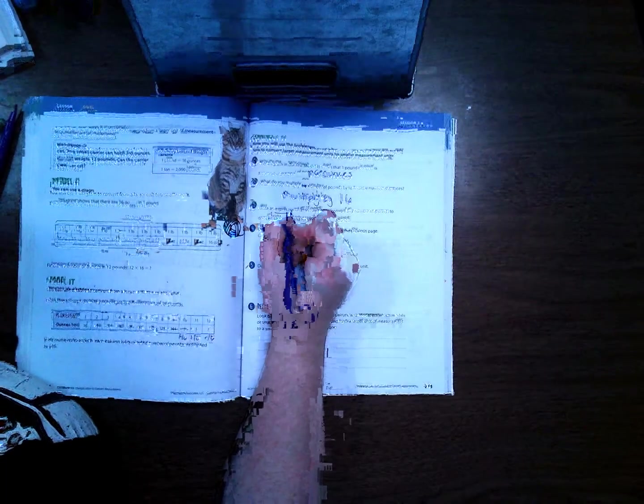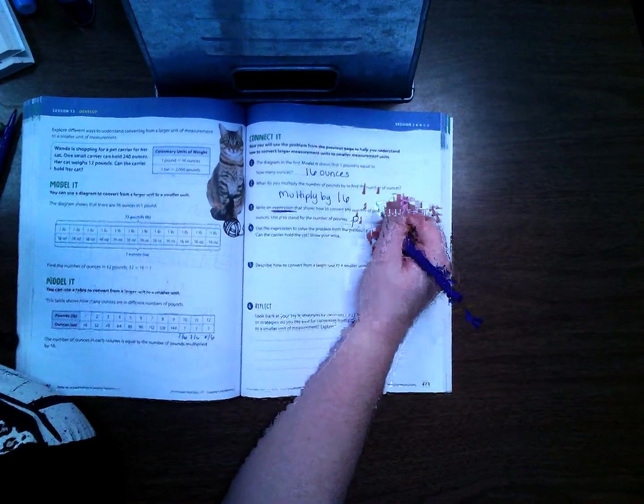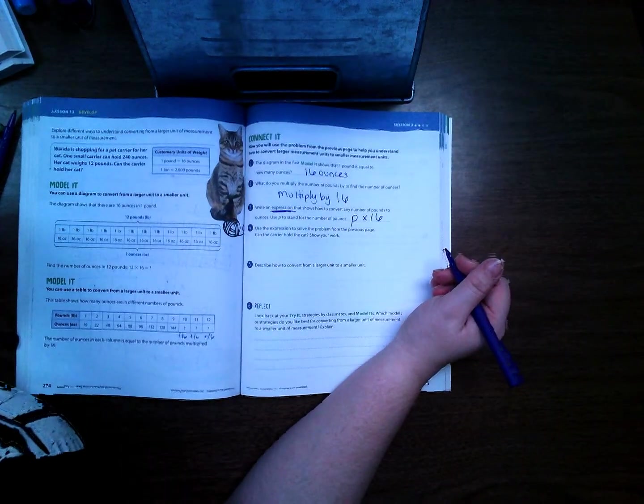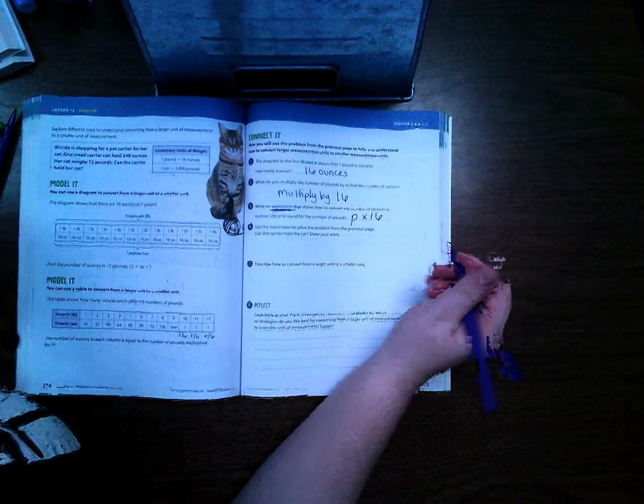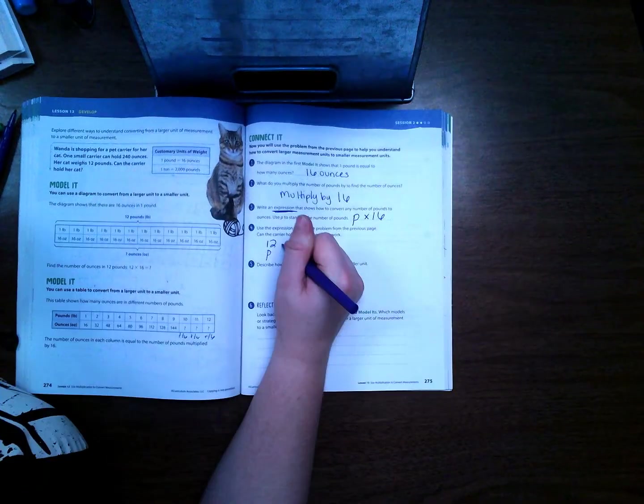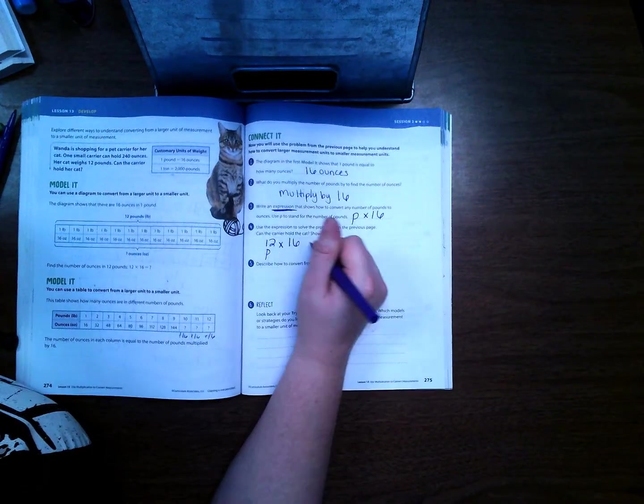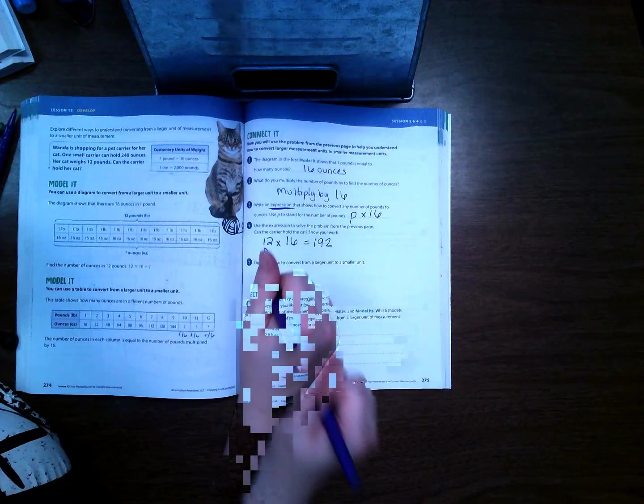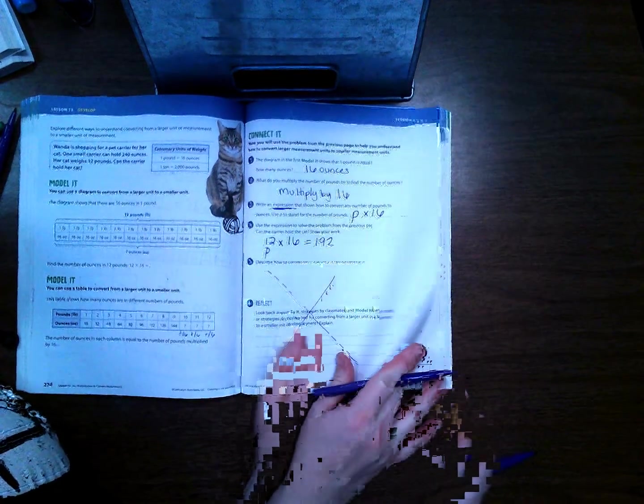Write an expression. An expression is something we learned about earlier, it's where you use a letter to represent something. So let's use p for pounds times 16, so that's our expression. We need to find, we have 12 pounds, p times 16 ounces, which equals 192. You can skip the last two on this page. Let's go to page 276.